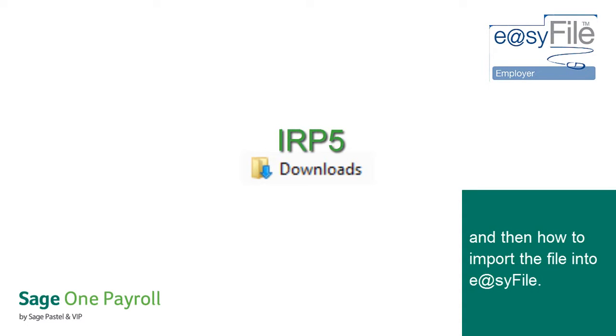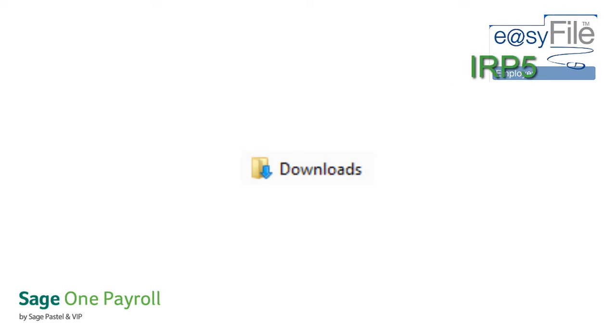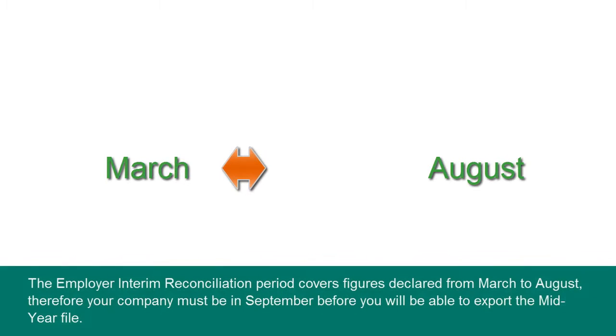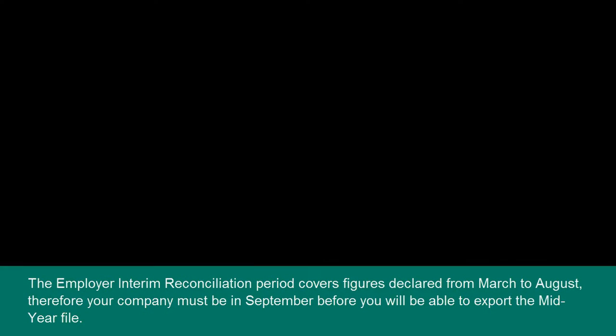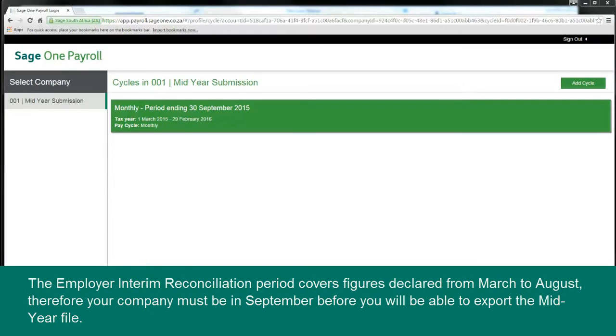The Employer Interim Reconciliation period covers figures declared from March to August, therefore your company must be in September before you will be able to export the mid-year file.